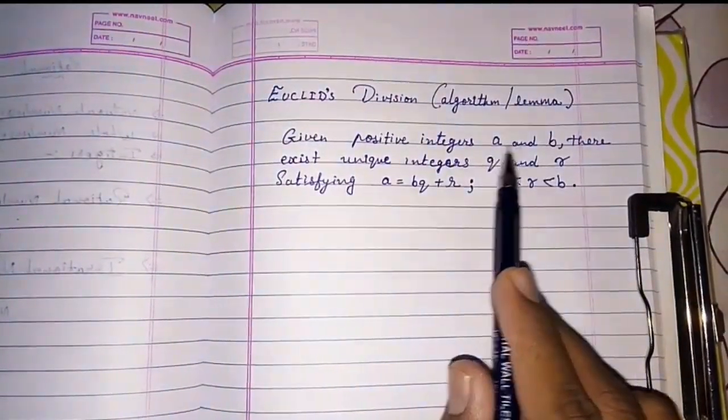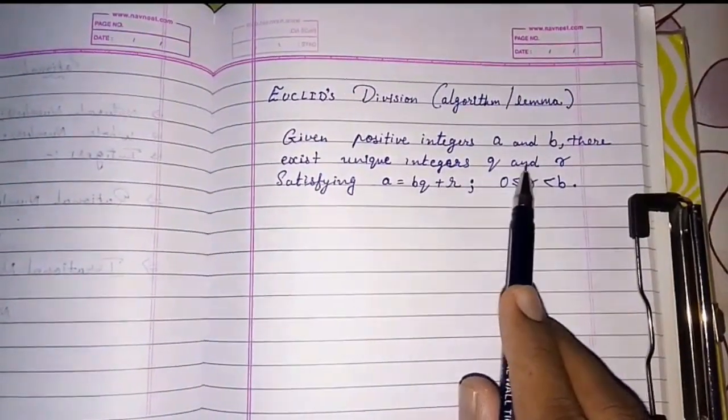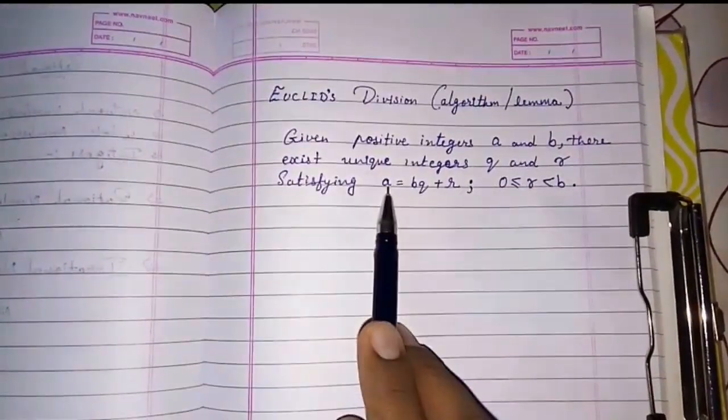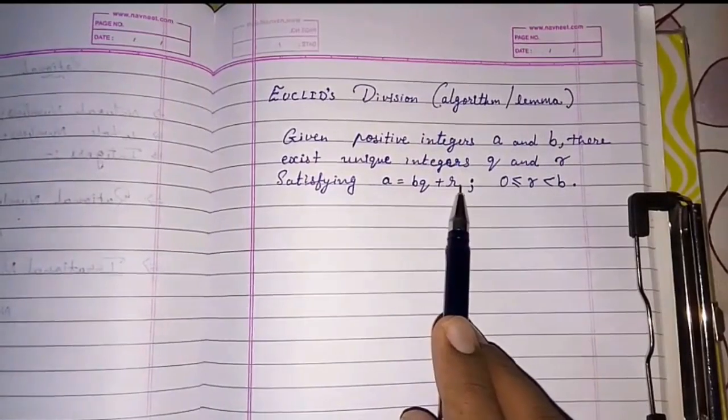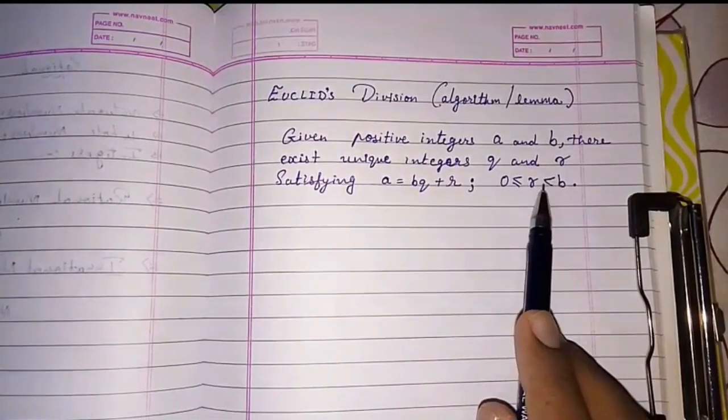Given positive integers a and b, there exist unique integers q and r satisfying a is equal to bq plus r, where r is greater than or equal to zero or less than b.